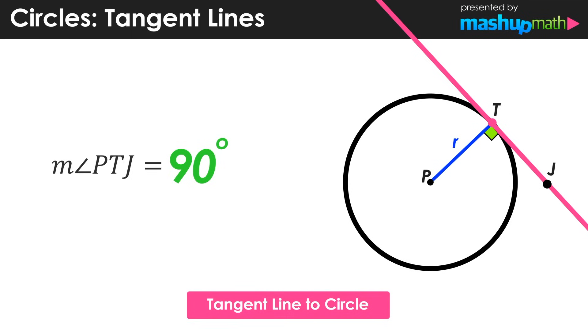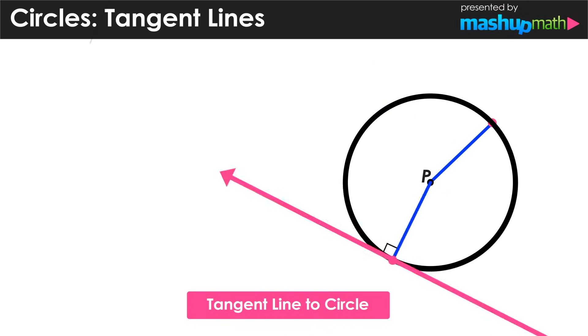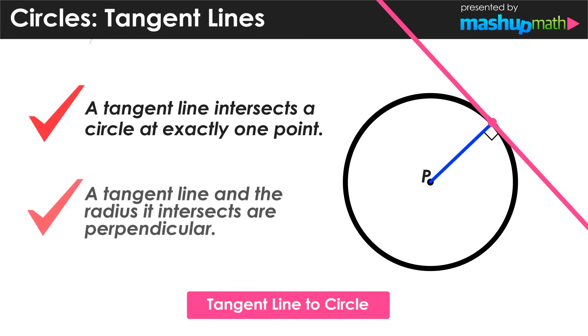And this perpendicular relationship between a circle's radius and a tangent line applies to every circle in any occasion. So the key concepts to understand here is that a tangent line intersects a circle at exactly one point, and that a tangent line and the radius it intersects are perpendicular.